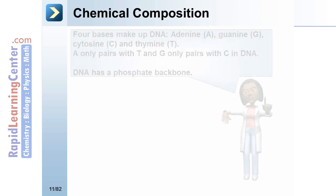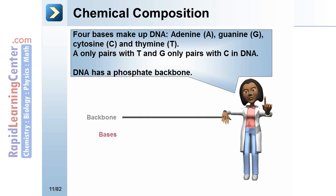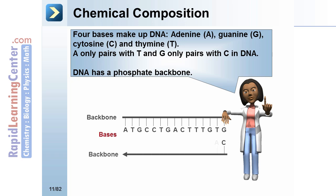Chemical composition. Four bases make up DNA: adenine, guanine, cytosine, and thymine. Adenine only pairs with thymine, and guanine only pairs with cytosine in DNA. Additionally, DNA has a phosphate backbone, which allows all the bases — adenine, thymine, guanine, and cytosine — to be positioned internally.